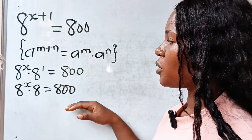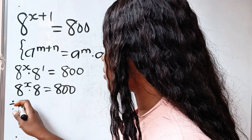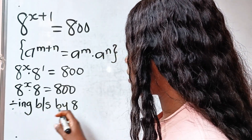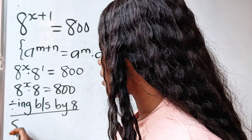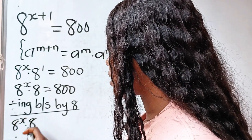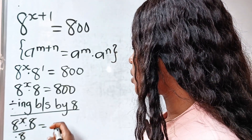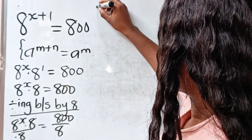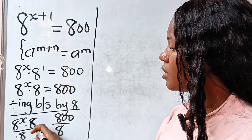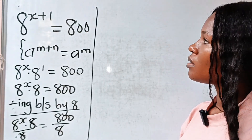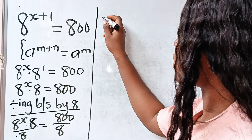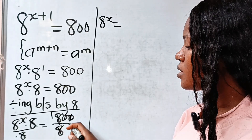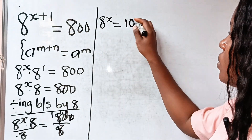So let's divide both sides of this equation by 8. We have 8 to the power of x multiplied by 8 divided by 8 is equal to 800 divided by 8. The 8s cancel, so we are left with 8 to the power of x is equal to 100.